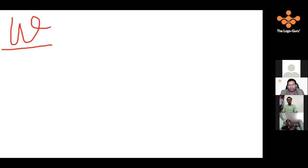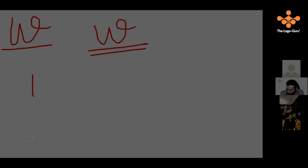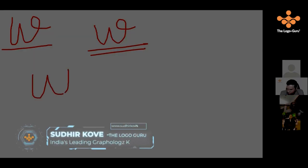In this W, what does it reveal? Generally, this is how you are going to write. This is the way you want to write, but after reaching this point, he wants to go back.